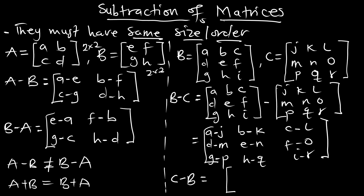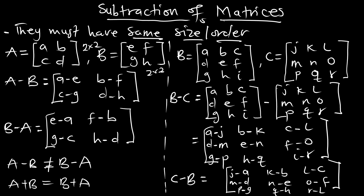You can do that for C minus B and everything is going to be reversed. So if you do C minus B, you are going to get J minus A, K minus B, L minus C, M minus D, N minus E, O minus F, P minus G, Q minus H, and R minus I in that form. So B minus C is not equal to C minus B. Let's check out some examples. We have 3 by 3 and 3 by 3, so matrix subtraction is possible in this example.